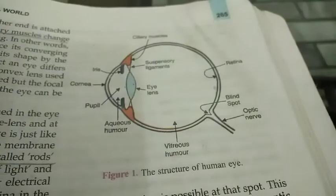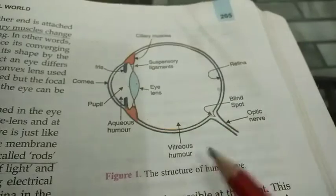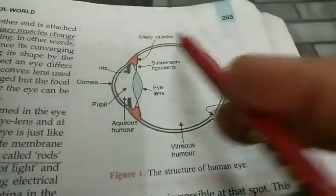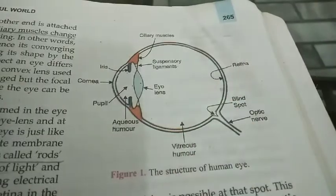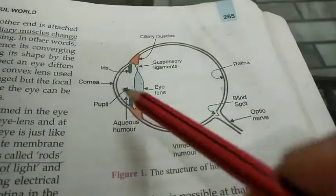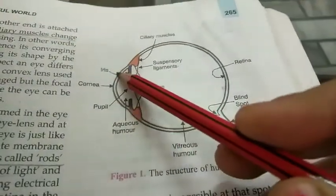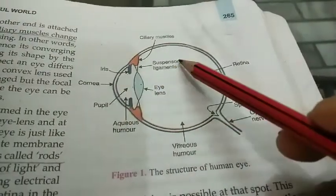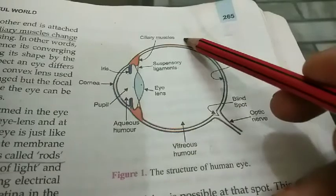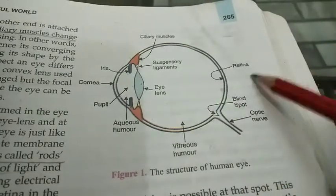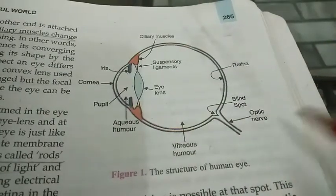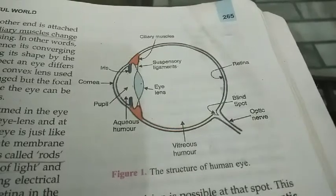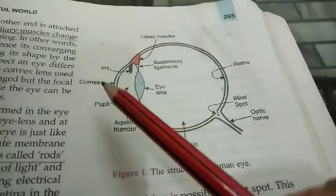This is the basic structure of the human eye. As you are seeing on the screen, the main parts of the human eye are: Cornea, Iris, Pupil, Eye Lens, Suspensory Ligaments, Ciliary Muscles, Retina, and Optic Nerves. So let's start first with the construction of the eye, beginning with the cornea.